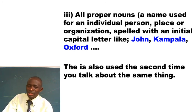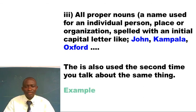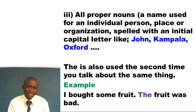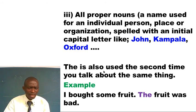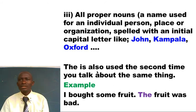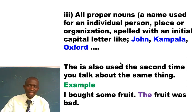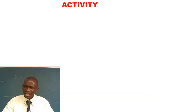THE is also used the second time you talk about the same thing. For example: 'I bought some fruit. The fruit was bad.' I introduced fruit for the first time as uncountable, then the second time I use THE. Another example: 'I saw a man. I saw a dog. The dog barked at night.' Or: 'I saw a person. The person shouted so loudly.' The second time I mention it, I use article THE. This principle is commonly applied in picture composition for primary five, six, and seven.